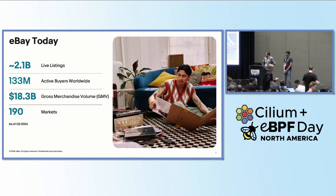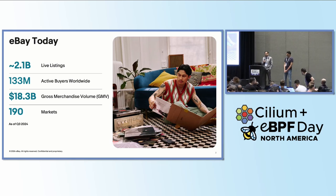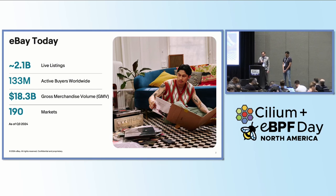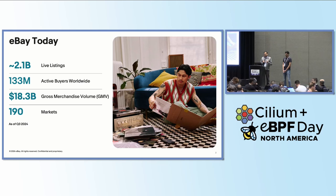eBay is a global marketplace. It connects millions of buyers and sellers worldwide. At any given point of time, we have around 2.1 billion live listings spread across a vast variety of product categories. As of Q3, we had a sales volume of around $18.3 billion, and we operate across 190 markets. With the vast variety of products, there is something for everyone to buy at every time at eBay.